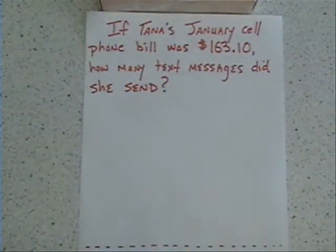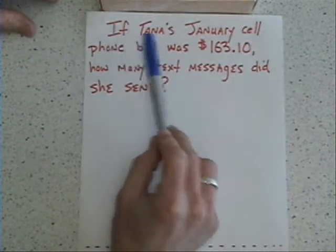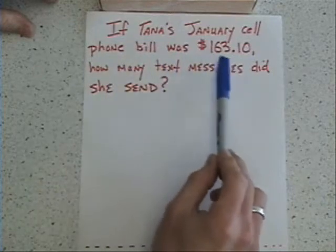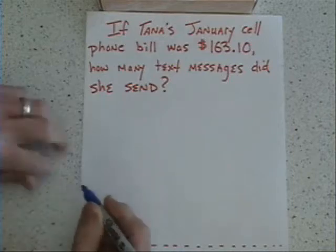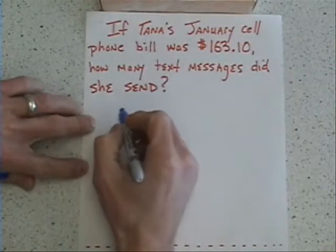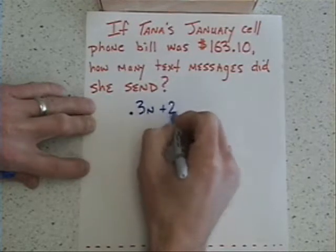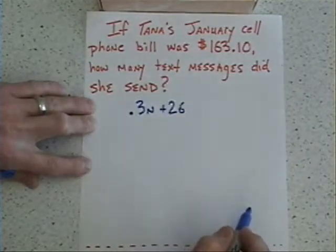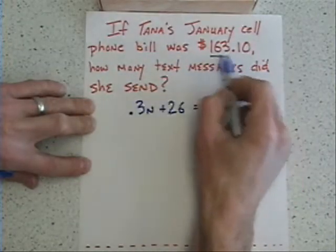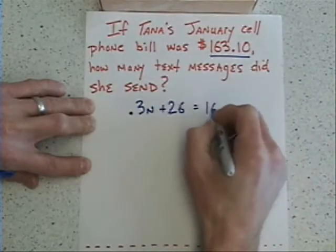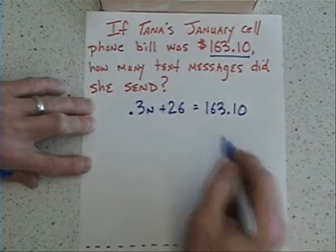Now if we extend this problem slightly — if Tanya's January cell phone bill was $163.10, how many text messages did she send? Let's use the equation we just calculated: .3n + 26 represents how much money she's going to spend per month. We know from the question that she spent $163.10, so I'm going to set that equal to the expression and use my equation-solving skills.